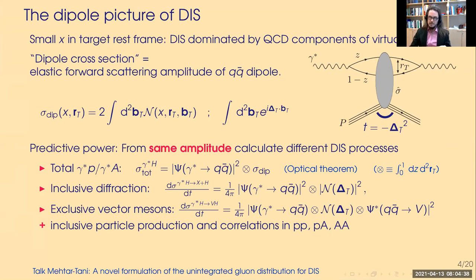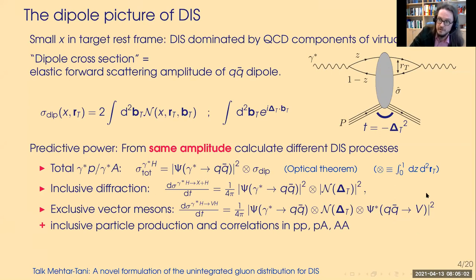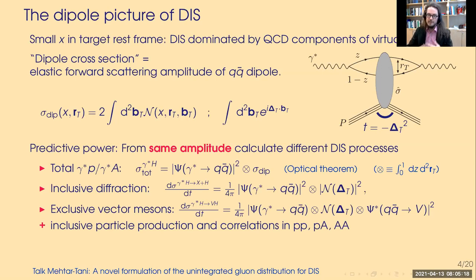The same amplitude appears in different DIS processes. You can use the optical theorem to express the total cross-section, so F2 and FL, as something linear in this amplitude. You can use it to calculate inclusive diffraction, diffractive structure functions by Fourier transforming and squaring, and with a wave function describing hadronization into a vector meson, you can calculate exclusive vector meson production. When you go to proton-proton, proton-nucleus, and nucleus-nucleus collisions, the same degrees of freedom appear in cross-sections and in initial conditions for color fields that create a quark-gluon plasma. This is why it has a large degree of universality and is a very useful concept.